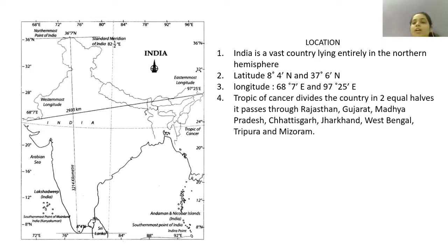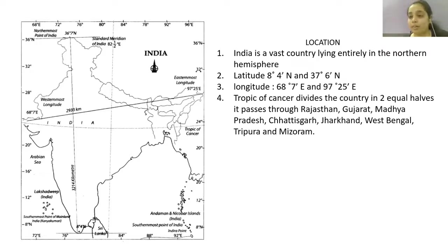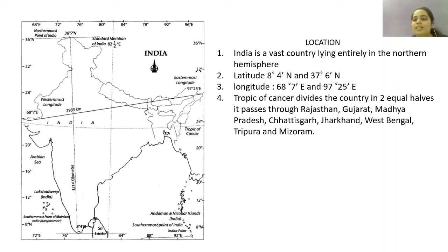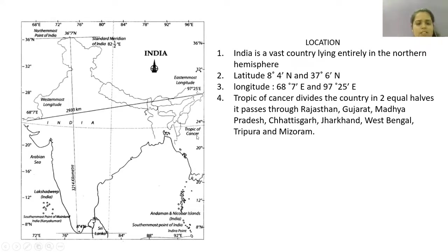Now, as you must be aware, above the equator there is the Tropic of Cancer, and to the south of the equator is the Tropic of Capricorn. The Tropic of Cancer is a latitudinal line which passes through India. India is a country through which the Tropic of Cancer passes. You can see in the image itself there is a dotted line where the Tropic of Cancer is mentioned.